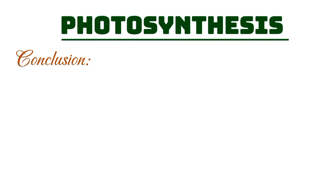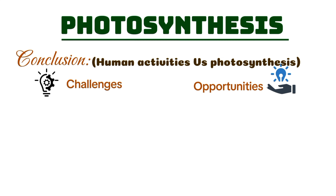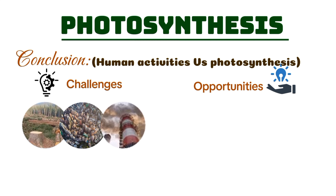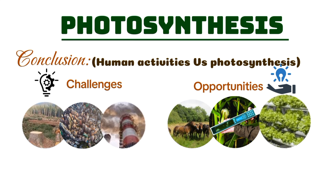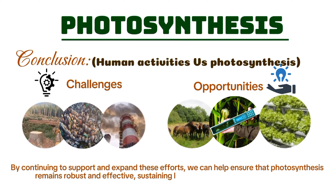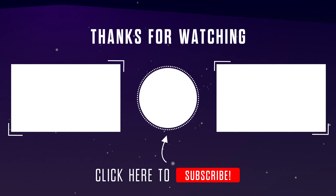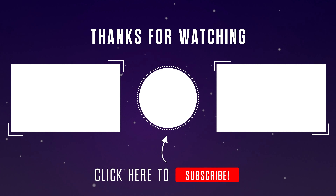In conclusion, the interplay between human activities and photosynthesis is complex, with both challenges and opportunities. While our actions have had significant negative impacts, the positive strides we're making through environmental restoration, technological innovation, and sustainable practices offer hope for the future. By continuing to support and expand these efforts, we can help ensure that photosynthesis remains robust and effective, sustaining life on Earth for generations to come. Thank you for joining us in this exploration of photosynthesis. If you found this video informative, please like, subscribe, and hit the bell icon for more content on how we interact with the natural world. See you in the next part of our series.